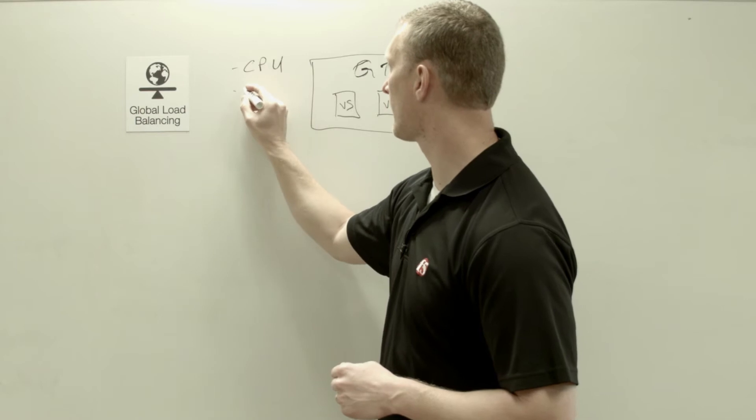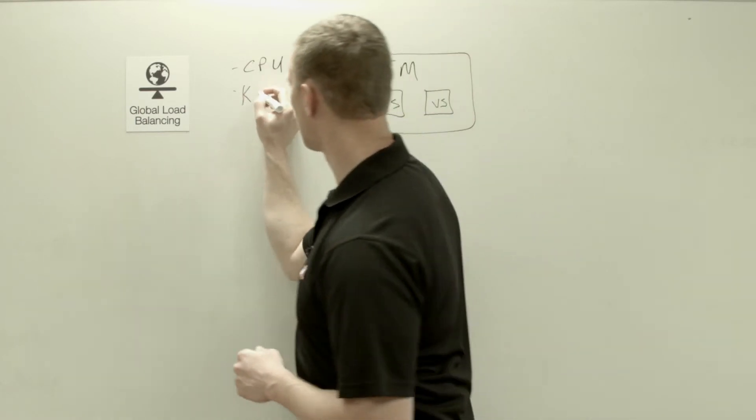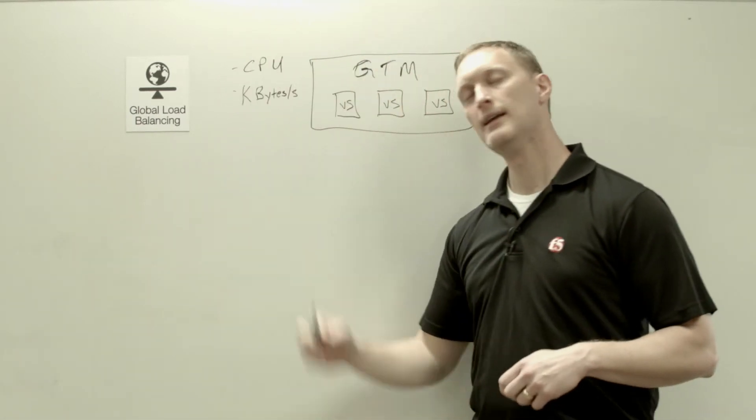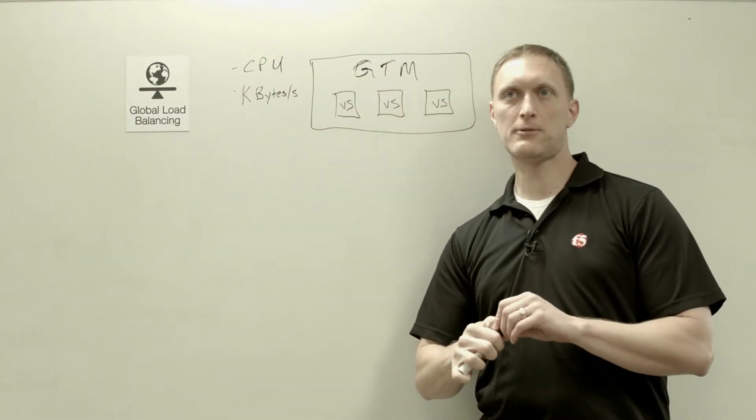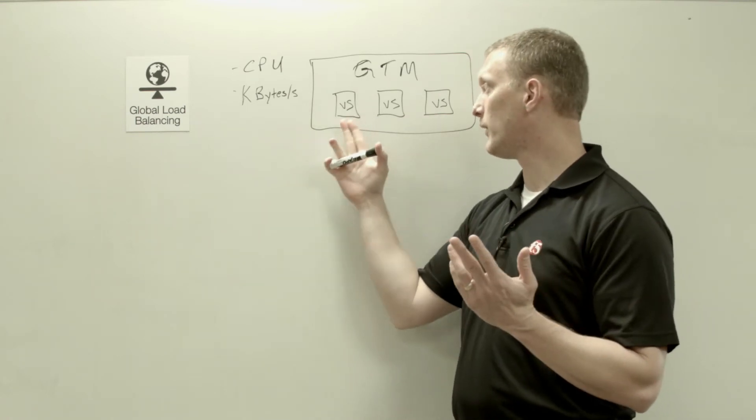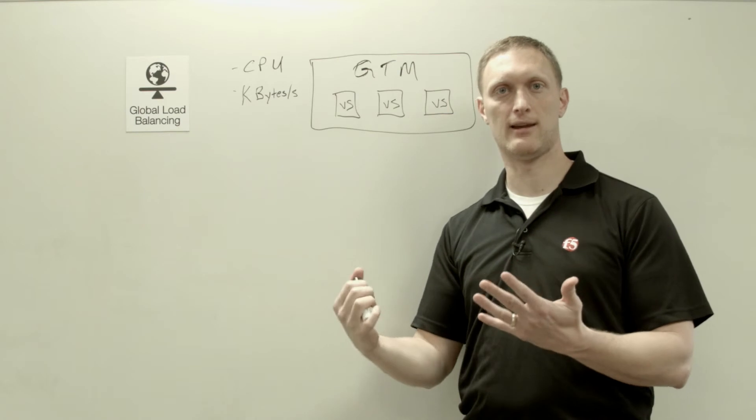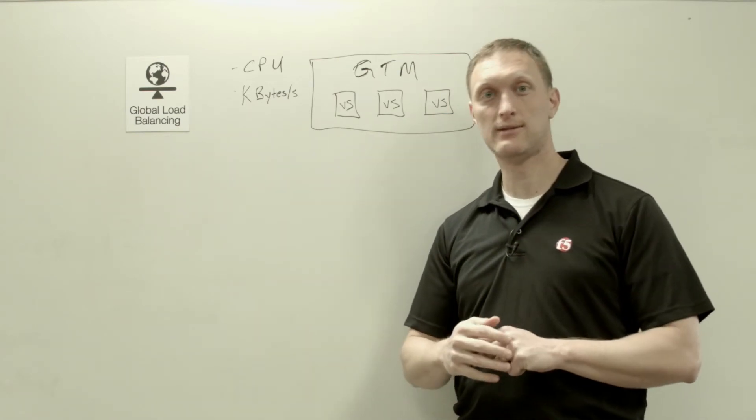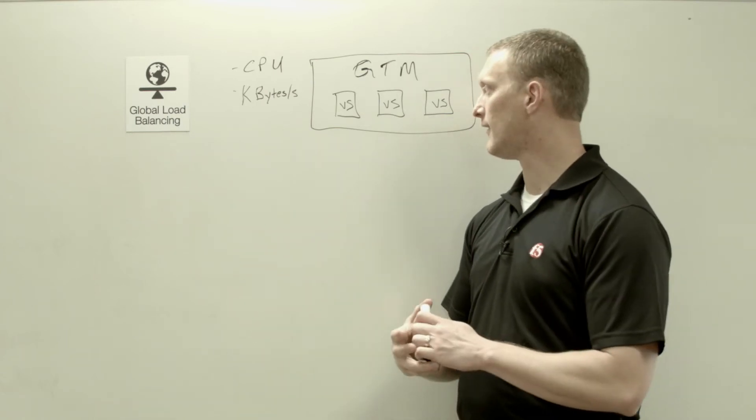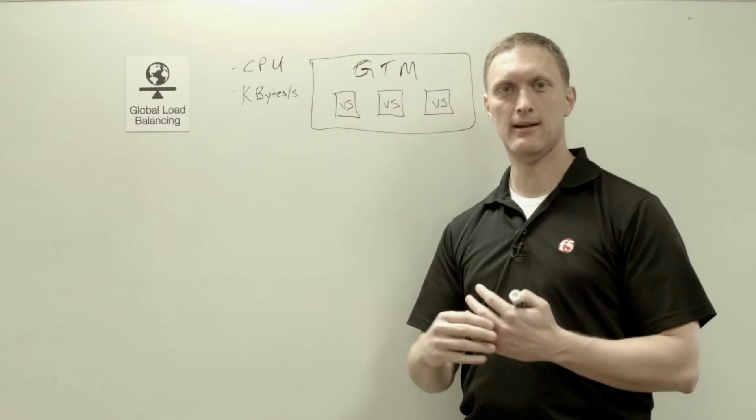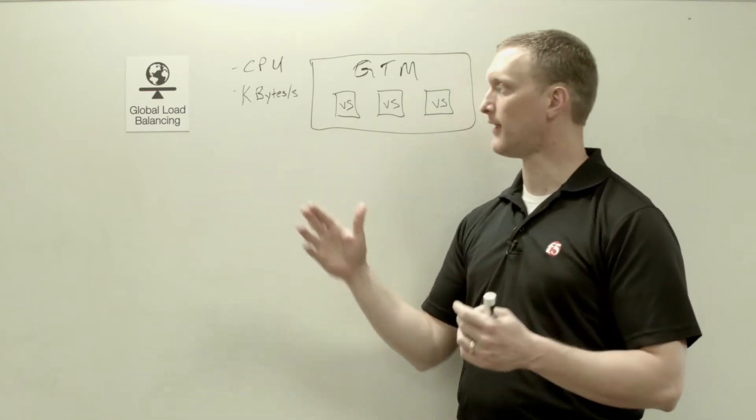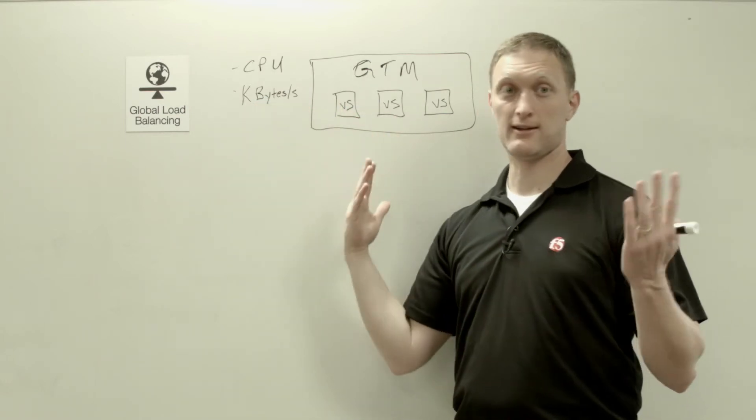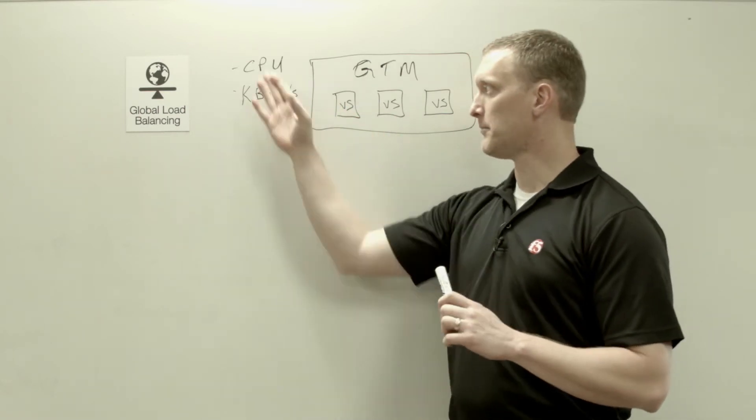The next one is the kilobytes per second. And I'm going to try to write this as kilobytes per second. Kilobytes per second basically says which virtual server has the most bandwidth capacity at that point, which one has the most available kilobytes per second availability, or the least bandwidth utilization, however you want to look at it. But it all results in the same thing of who can process the most kilobytes per second at that point. And so whichever one can, that's the one that gets selected. And so both of these are pretty straightforward.